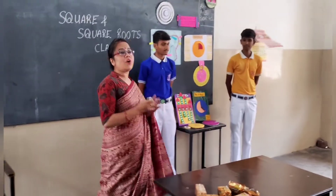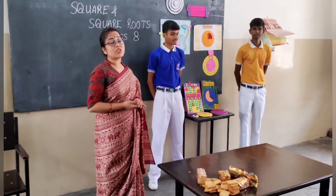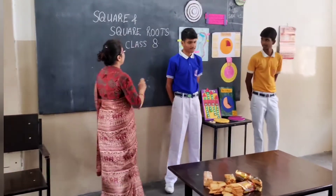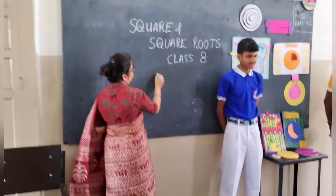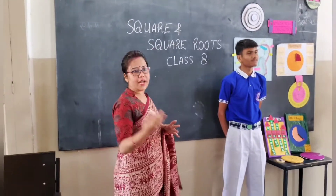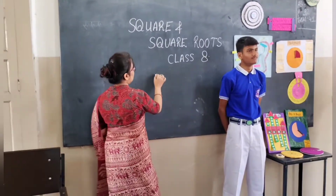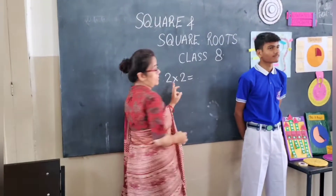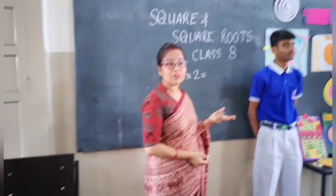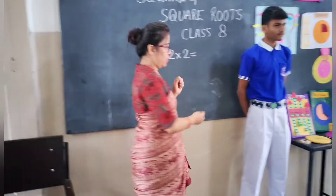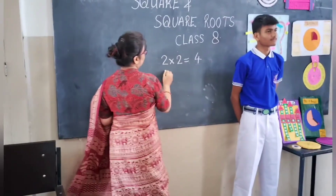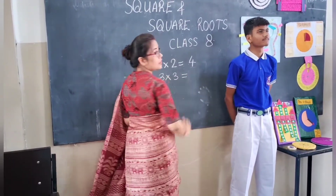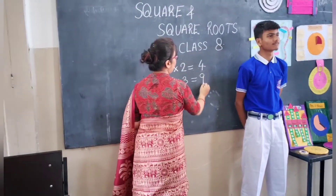Firstly, understand what are perfect squares. Perfect squares can be represented as a number multiplied by itself. So two into two gives you four. And three into three gives you nine.